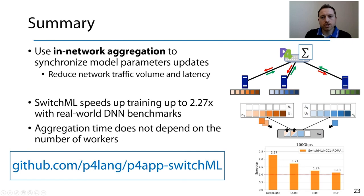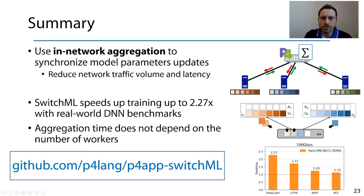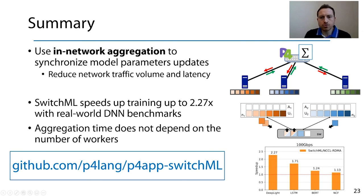To summarize, SwitchML performs in-network aggregation to synchronize model parameter updates, reducing both traffic volume and latency. We observed speedups up to 5.5x over NCCL TCP and 2.3x over NCCL RDMA with real-world benchmarks, and showed that with SwitchML, aggregation time does not depend on the number of workers, making it more beneficial with larger cluster sizes. We are sharing the SwitchML implementation as an open-source project under the P4Apps working group of P4.org, and we invite everyone to use it and contribute. Thank you for listening.